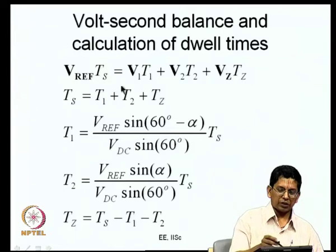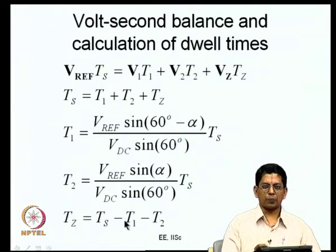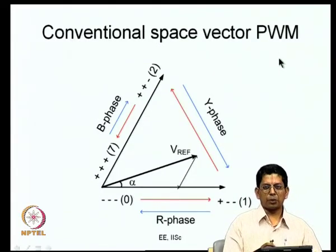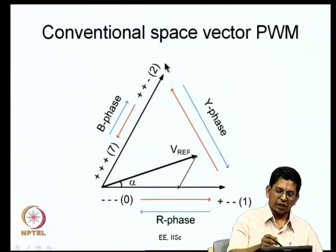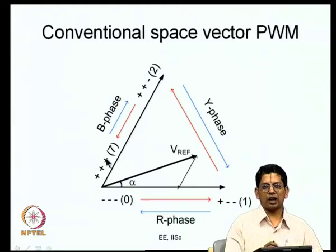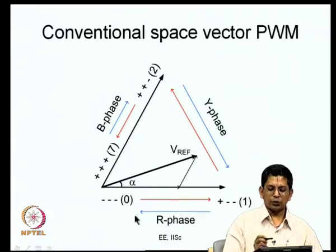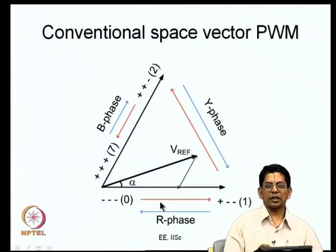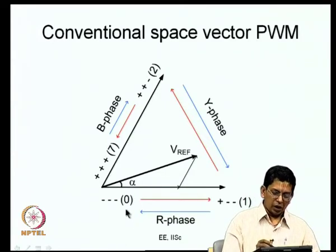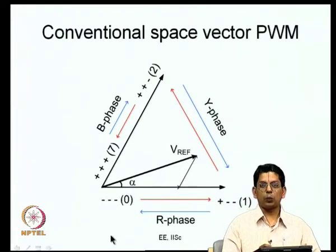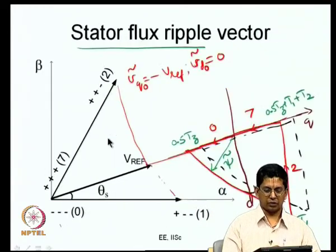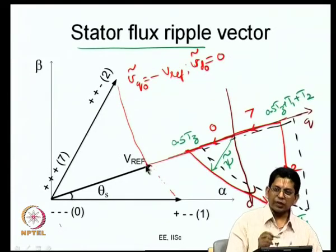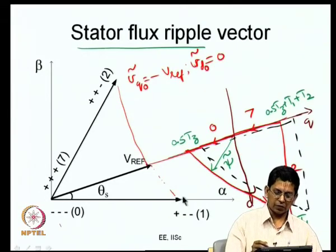To produce that average voltage vector, T1 and T2 are calculated as discussed in previous lectures. In conventional space vector PWM you start applying one zero state, then switch to the first active state, then the second active state, then go to the other zero state — this is one sub-cycle or half carrier cycle. In the other sub-cycle you come back the reverse way. The red lines indicate the sequence in one carrier cycle and the blue lines in the other, and these two alternate. The null vectors 0 and 7 are applied for equal durations T_z/2, so the sequence is: T_z/2 for state 0, T1 for vector 1, T2 for vector 2, T_z/2 for state 7.